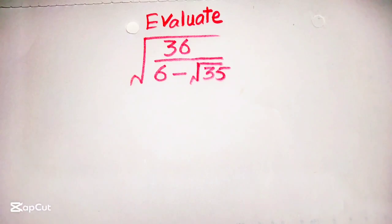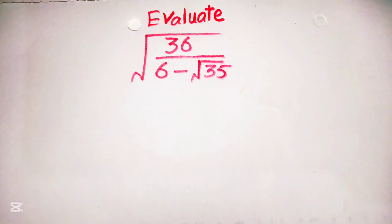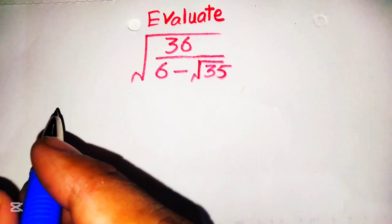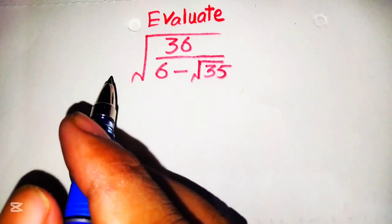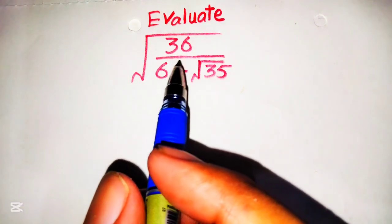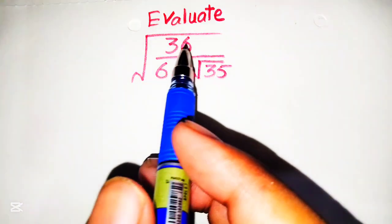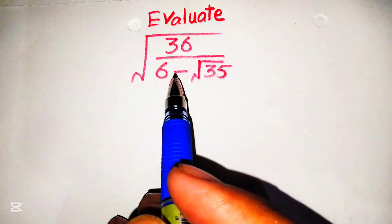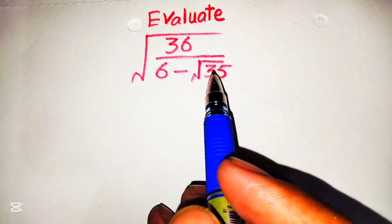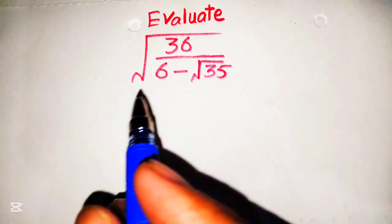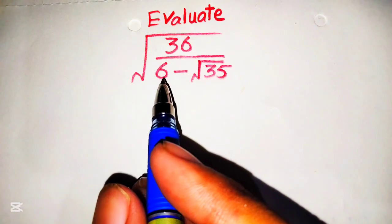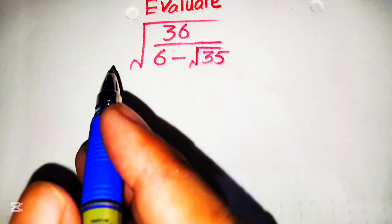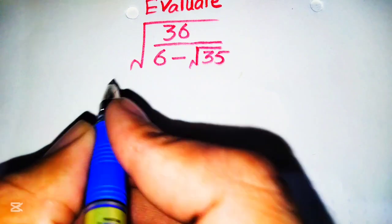Hello guys, welcome to my YouTube channel Long-Paid Edge. Hopefully you are doing fine. Today we are going to solve a very nice radical equation which is given as the square root of 36 over 6 minus square root of 35, and we have to simplify this given complex equation.